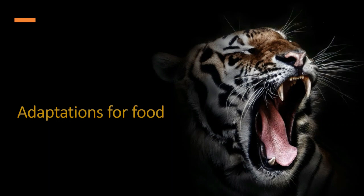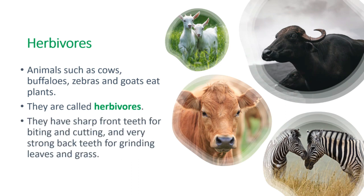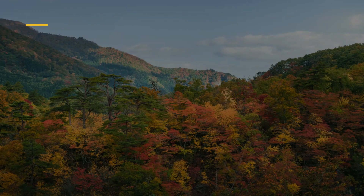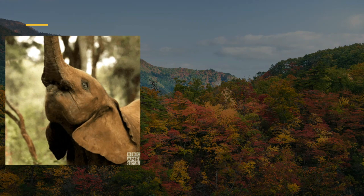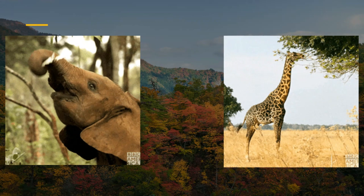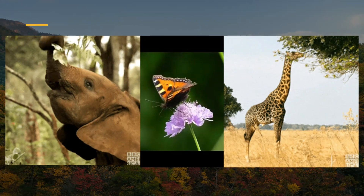Animals eat different kinds of food. Accordingly, they have features that make it easy for them to gather and eat their food. Animals such as cows, buffaloes, zebras and goats eat plants. They are called herbivores. They have sharp front teeth for biting and cutting and very strong back teeth for grinding leaves and grass. Many herbivore animals have special features that help them to gather their food. Elephants have long trunks to pull out grass and leaves. Giraffes have a long neck to reach for leaves from tall trees. Butterflies have a tube-like mouth to suck nectar from flowers.